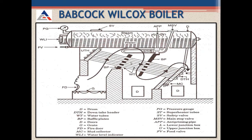The tubes are inclined at some particular angle — not horizontal, not vertical. As water starts heating up it converts into steam and moves towards the uptake header, then back into the drum. This cycle repeats until all the water is converted into steam. There are also superheater tubes to further heat the steam, and an anti-priming pipe to remove moisture content and produce dry saturated steam. Other fittings include a safety valve, pressure gauge, water level indicator, and feed valve.